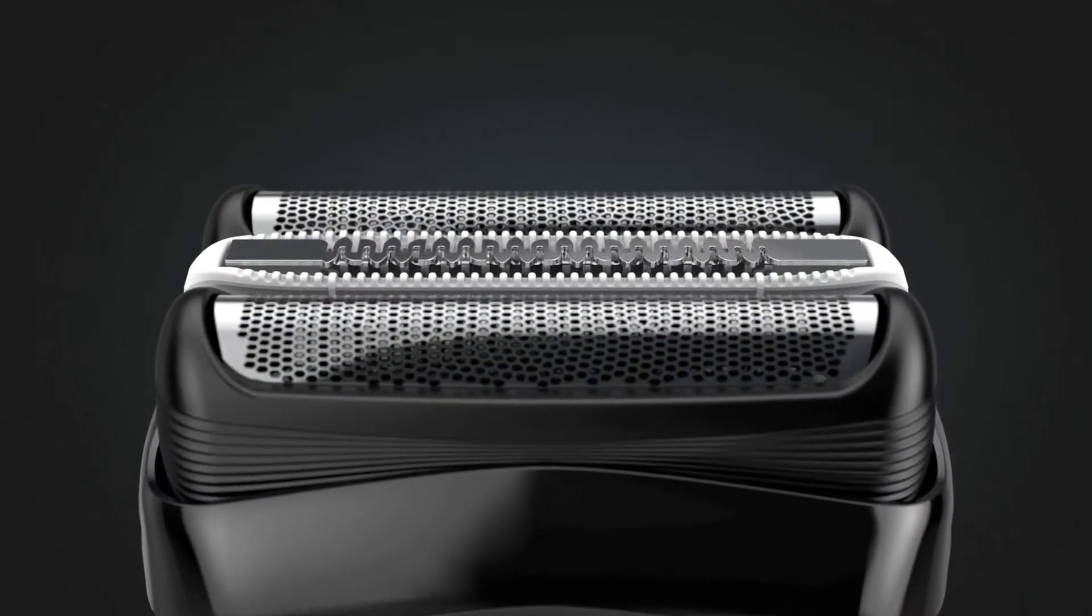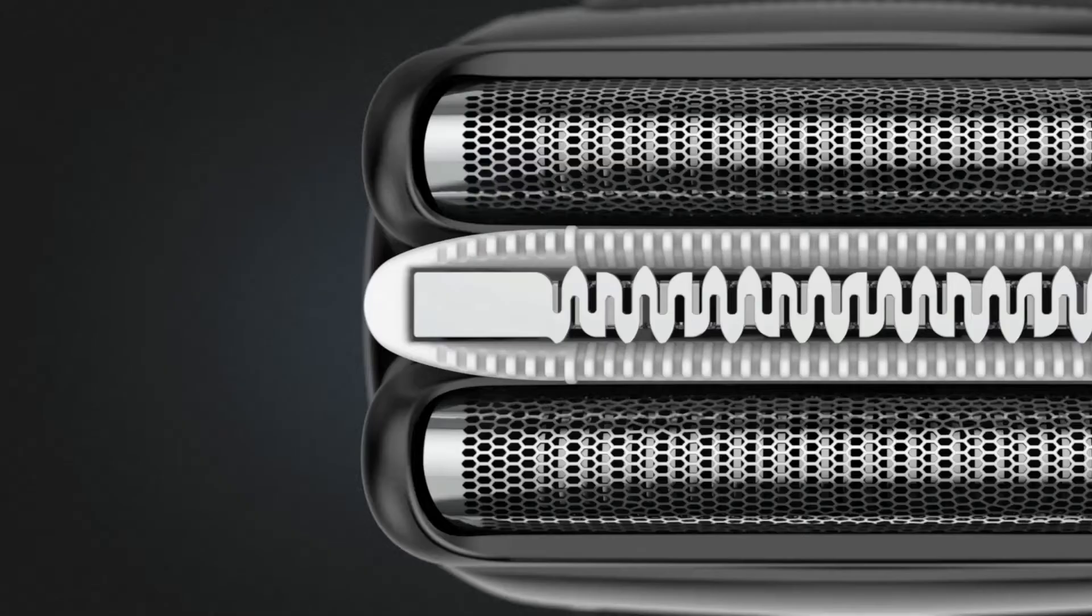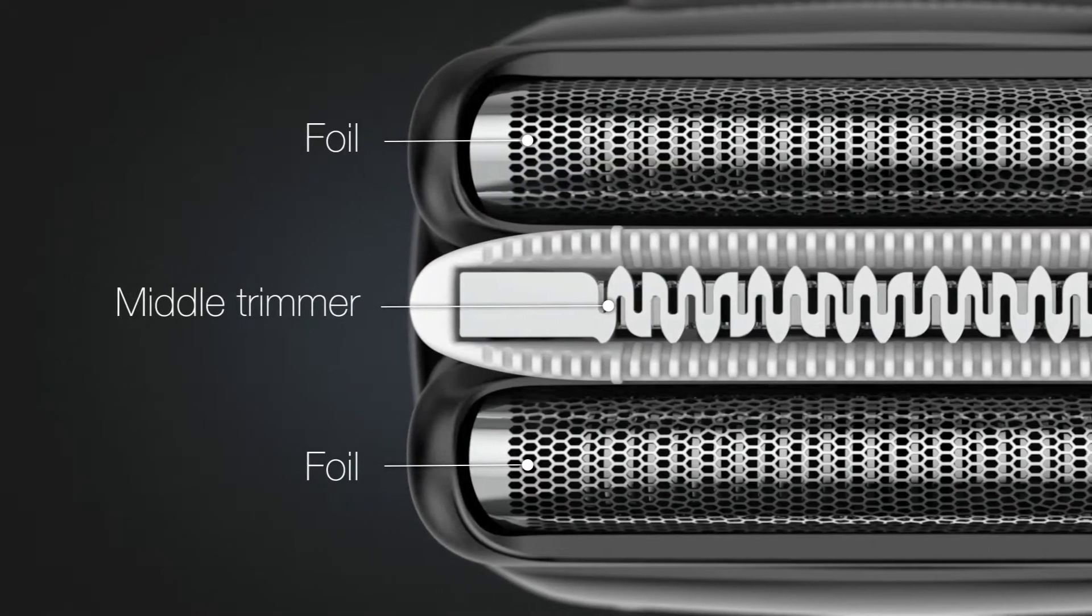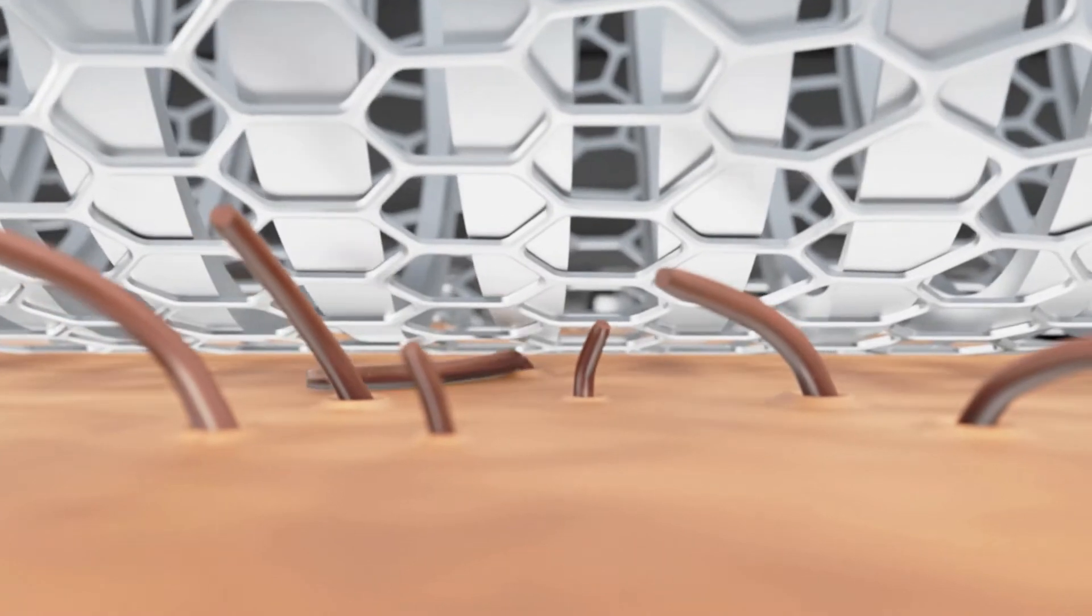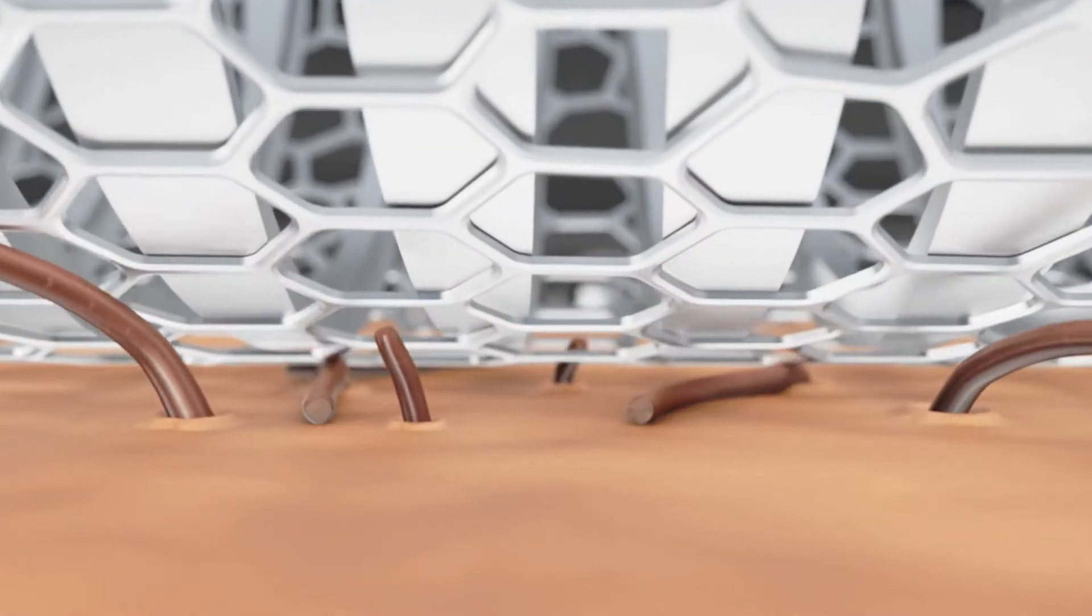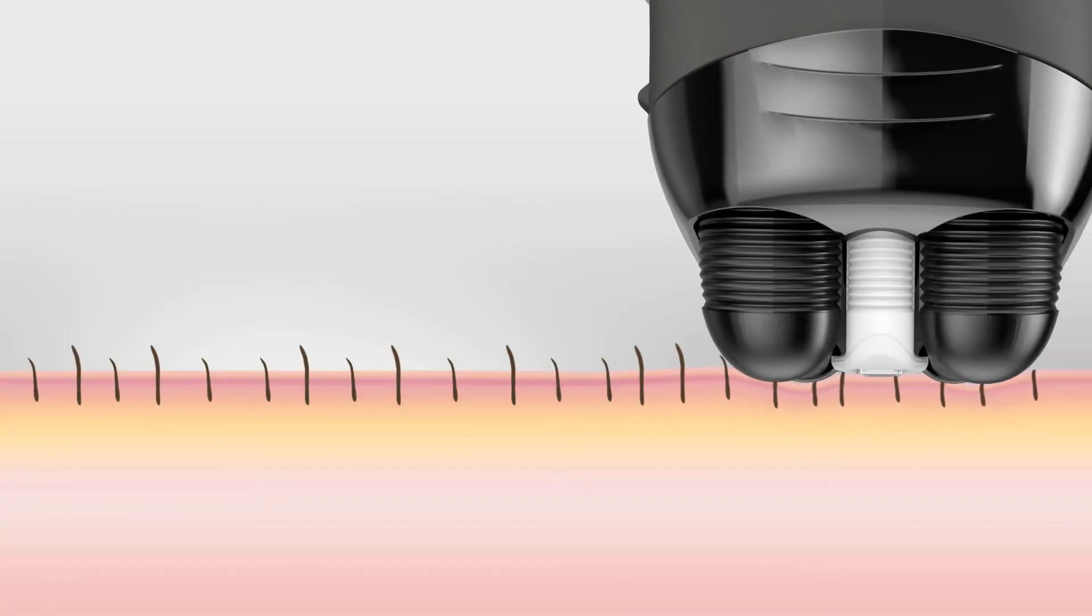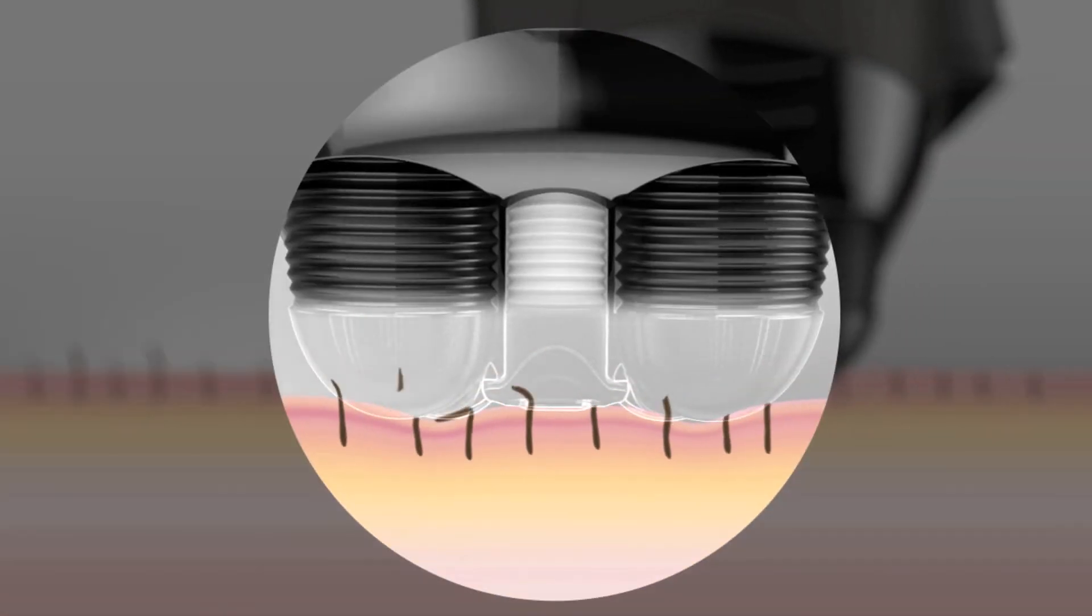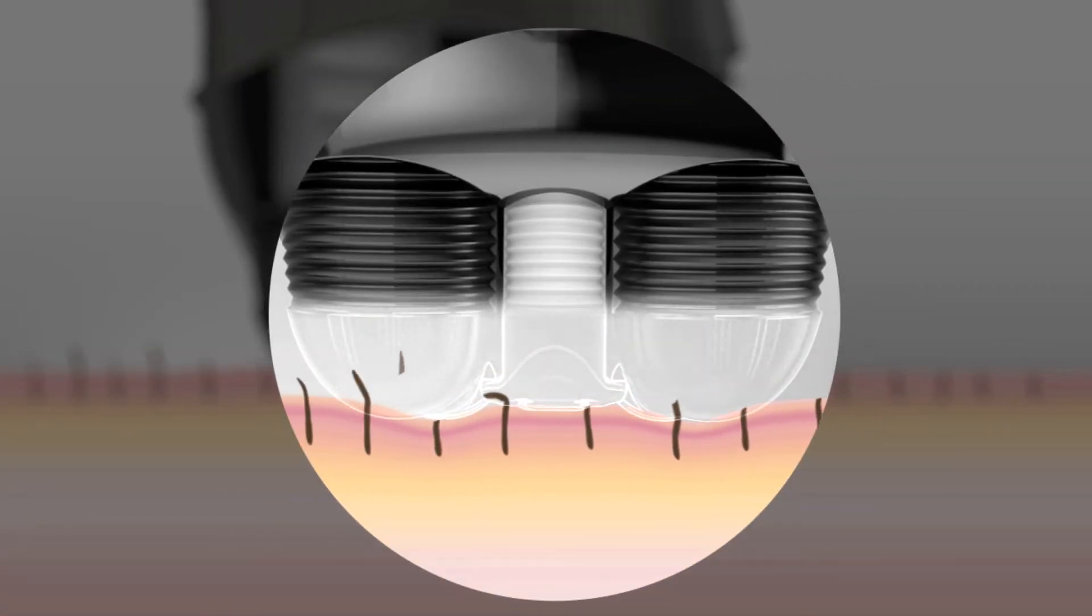This modern shaver head consists of foils and a central middle trimmer. The foil catches shorter hairs but easily misses longer hairs like on a three-day beard. That's where the middle trimmer comes in. It pre-cuts these longer hairs, then a second foil shaves the now shorter hairs.